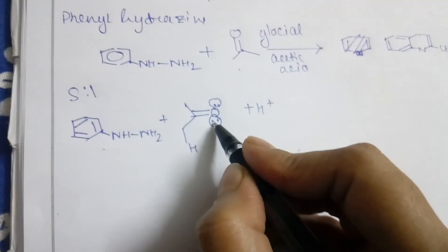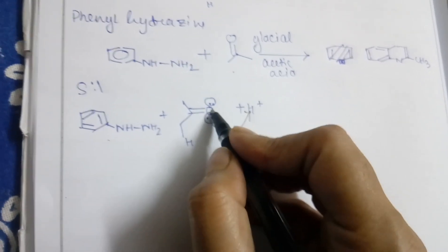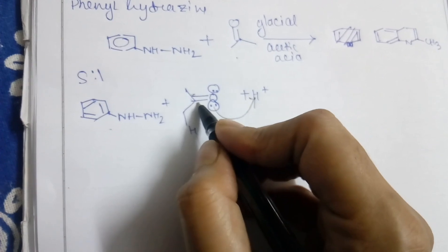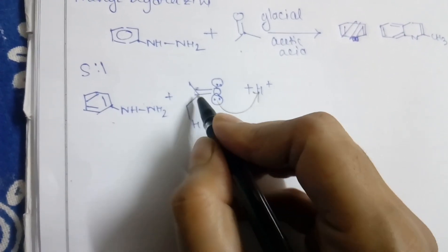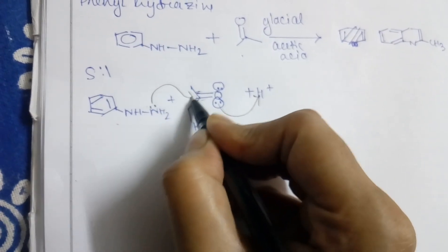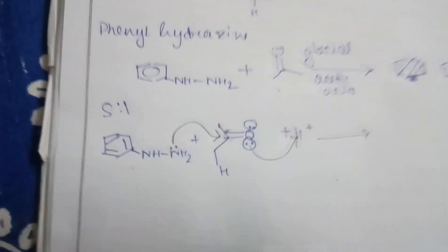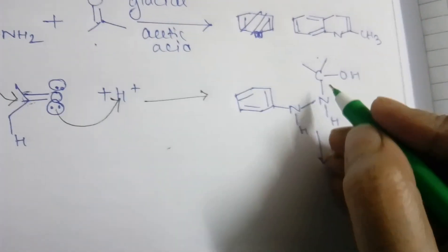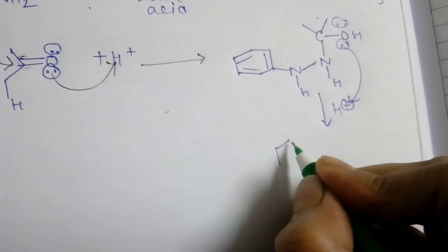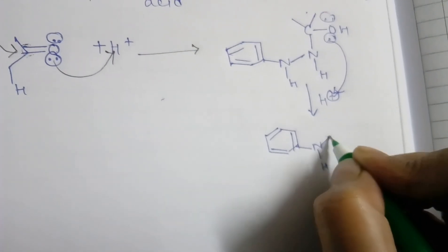The lone pairs of oxygen will capture H+ and a positive charge is generated upon the oxygen. This increases the electrophilicity of the carbonyl carbon. Then the lone pair of nitrogen of phenylhydrazine will attack this carbonyl carbon and the reaction proceeds. As the medium is acidic, the lone pair of oxygen, due to high electronegativity, captures H+, and a very good leaving group H2O+ forms, which leaves as H2O.